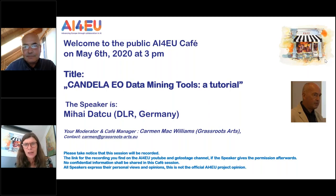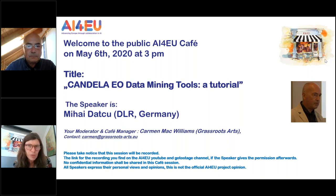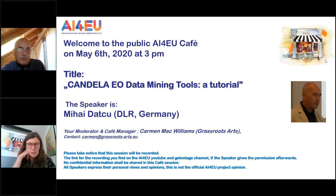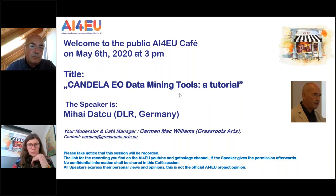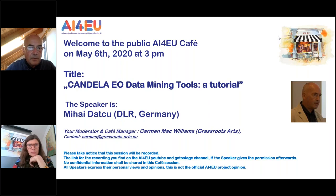Copernicus data is free and open for everyone around the world. The data is accessible on the European Space Agency hub — searching on the Copernicus hub provides free access to any kind of data from anywhere in the world. Publications using Copernicus data come from China to Alaska, from Australia to Hawaii. It is completely free, completely open, for any kind of application with no restrictions.